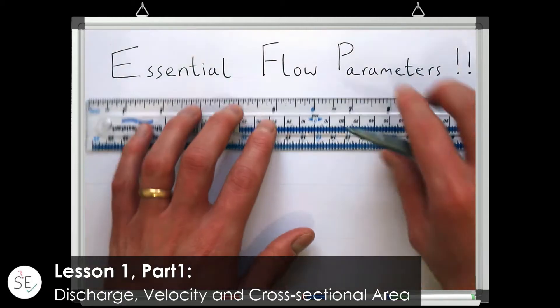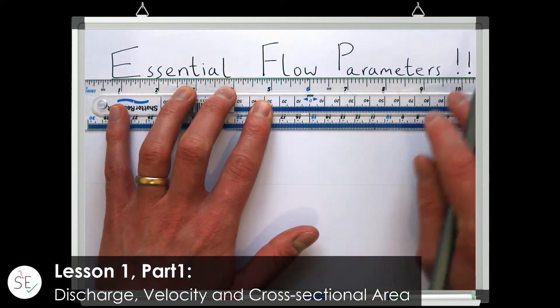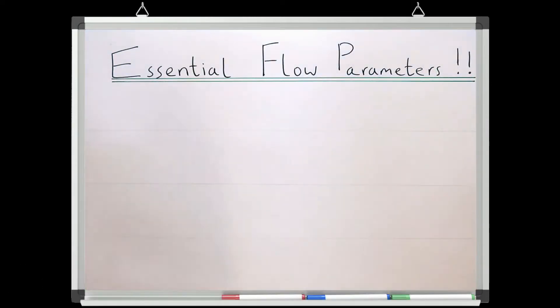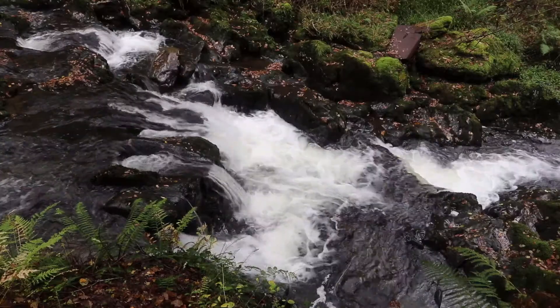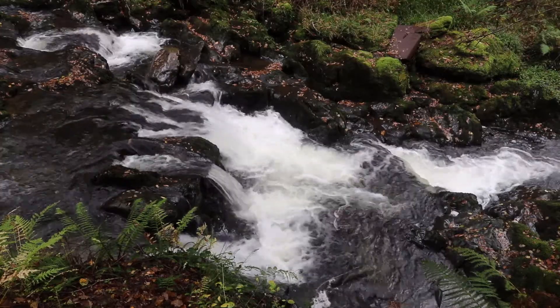The first thing we need to do if we're going to start to understand flowing water is to be able to come up with some essential flow parameters to describe the flow. Consider a flowing stream, can you think of a short list of the most essential ways in which you'd quantify what's going on here?